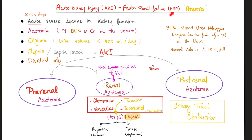Acute kidney injury might present with oliguria — less than 400 or 500 mL of urine per day — or even anuria, but it doesn't have to. Some people have AKI with normal urine volume. Sepsis or septic shock and hypovolemic shock are common causes. Pre-renal: blame the renal artery for not bringing enough blood. Post-renal: blame the outflow tract for not draining urine from the kidney. Intra-renal: blame the glomerulus, tubule, interstitium, or renal vessels.